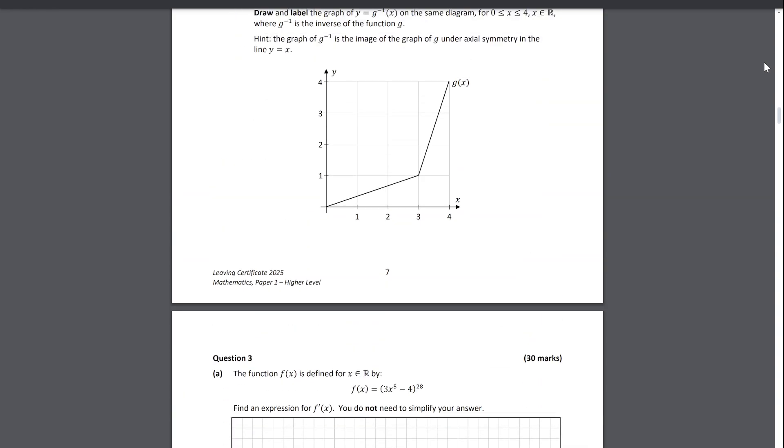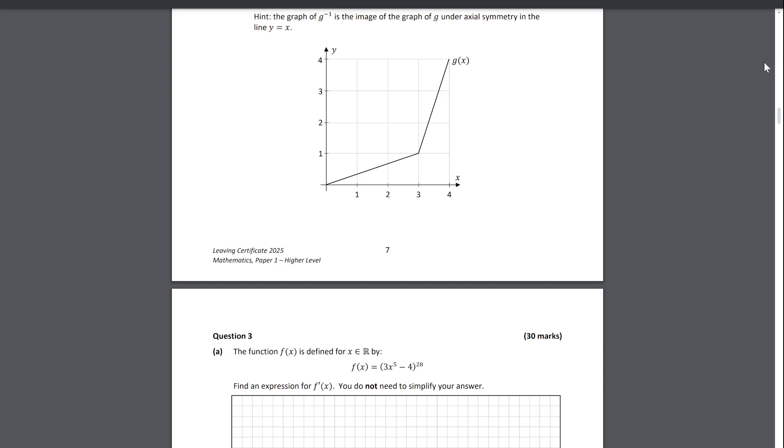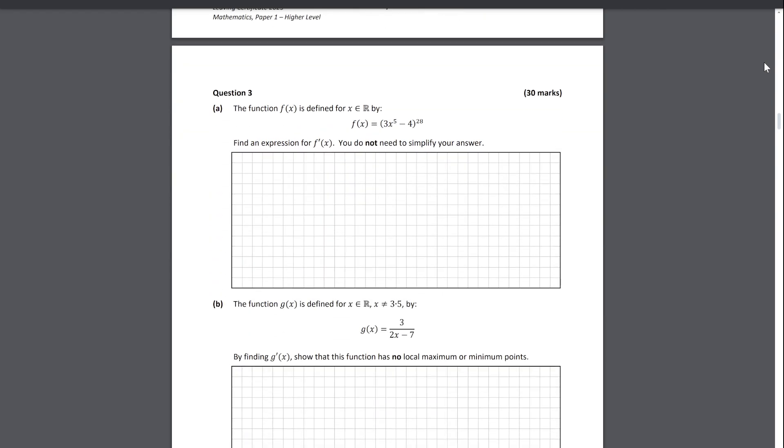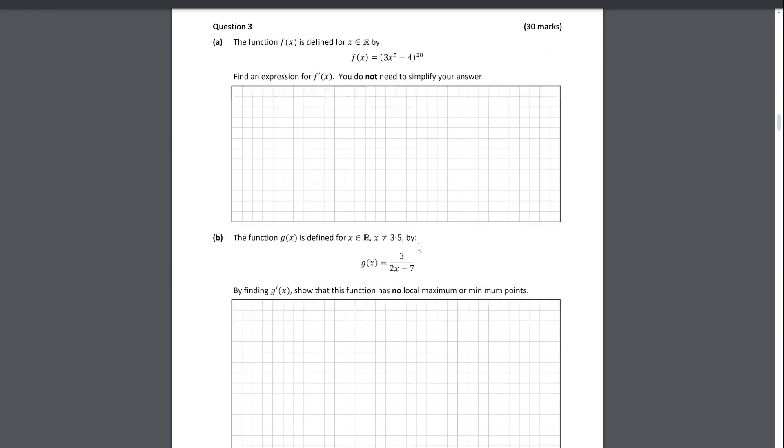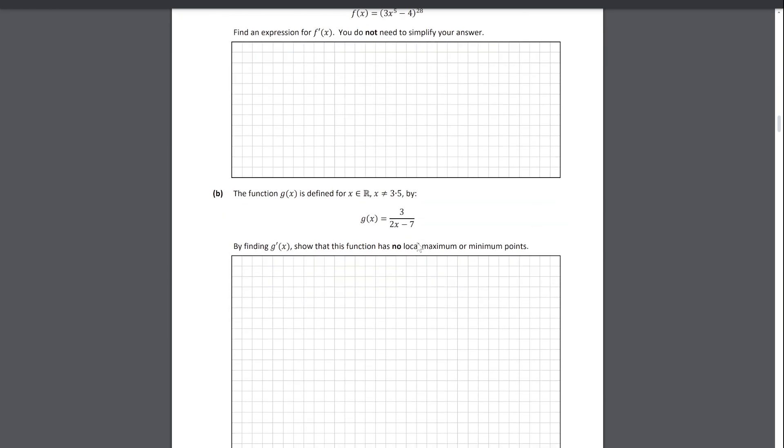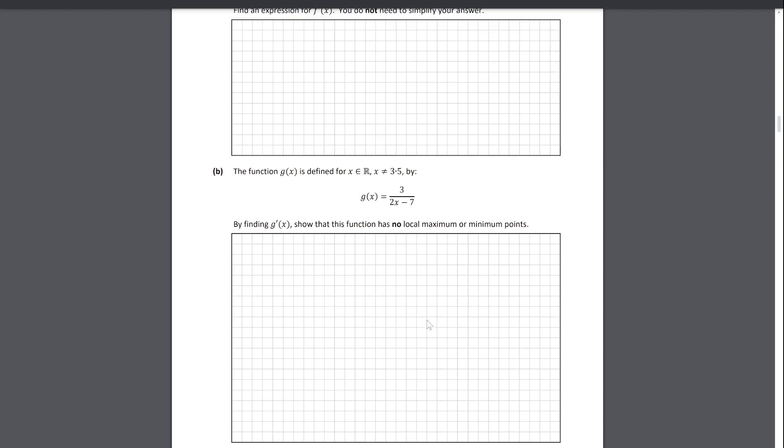Question three, again two more derivatives. Here we have a pretty bulk-standard chain rule, and then depending on what kind of person you are, it's another chain rule or quotient rule question. Then we have to show that it has no local maximum or local minimum points, so just essentially proving that this can never be zero.